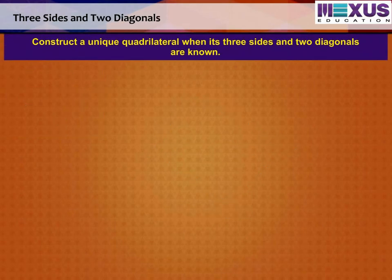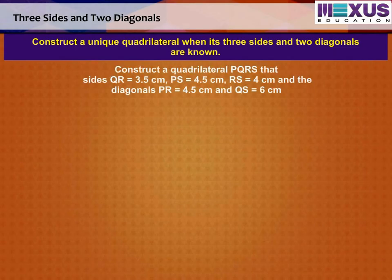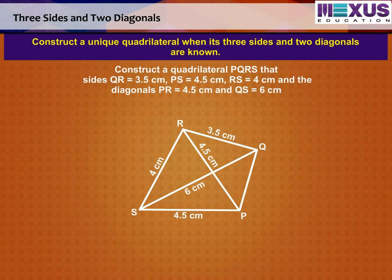Let us learn how to construct a unique quadrilateral when its three sides and two diagonals are known. Construct a quadrilateral PQRS such that sides QR is equal to 3.5 cm, PS is equal to 4.5 cm, RS is equal to 4 cm, and the diagonals PR is equal to 4.5 cm and QS equal to 6 cm.